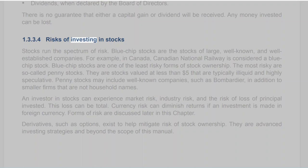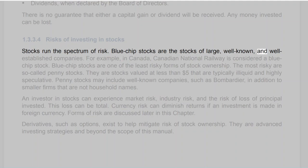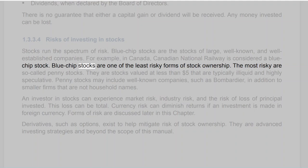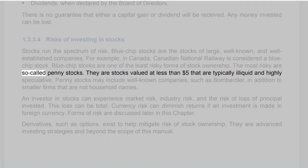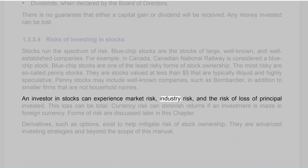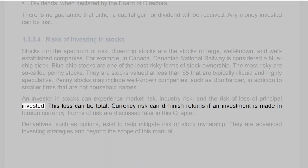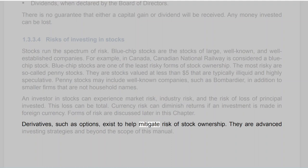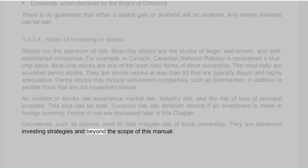Section 1.3.3.4: Risks of Investing in Stocks. Stocks run the spectrum of risk. Blue-chip stocks are the stocks of large, well-known, and well-established companies — for example, Canadian National Railway is considered a blue-chip stock and is one of the least risky forms of stock ownership. The most risky are penny stocks — valued at less than $5, typically illiquid and highly speculative. An investor in stocks can experience market risk, industry risk, and the risk of loss of principal, which can be total. Currency risk can diminish returns if an investment is made in foreign currency. Derivatives such as options exist to help mitigate risk of stock ownership, but are advanced investing strategies beyond the scope of this manual.